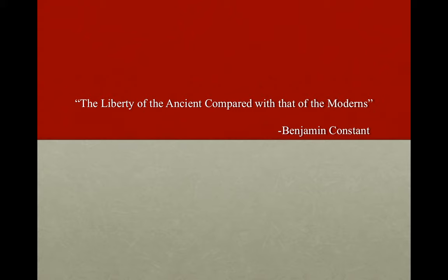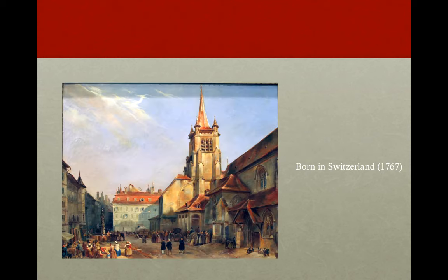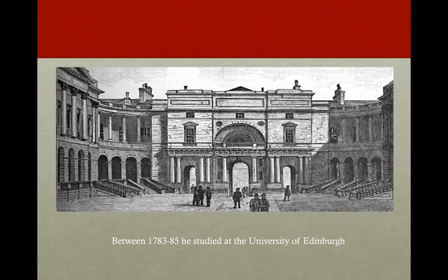The idea of Benjamin Constant was presented in his essay 'The Liberty of Ancients Compared with that of the Moderns,' written in the early 1800s. Benjamin was a key thinker in the French classical liberal tradition. He was born in 1767 in Switzerland, originally a descendant of a French Huguenot family who sought refuge there from religious persecution. Between 1783 and 1785 he studied at the University of Edinburgh, where he was introduced to thinkers such as Adam Smith and Edmund Burke, who remained an influence on his thought.